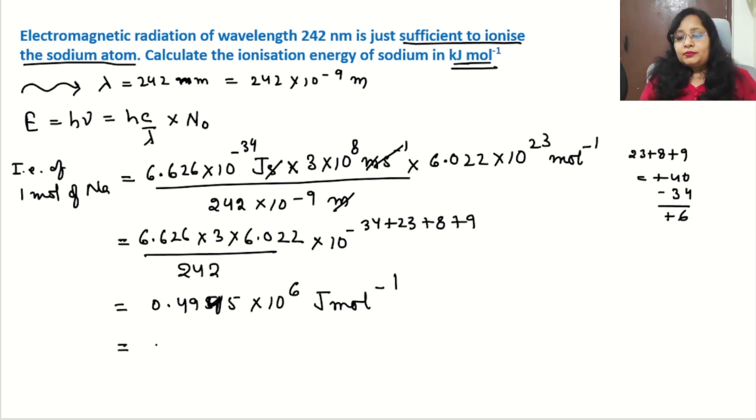So we can write 0.4945 into 10 to the power 6 into 10 to the power minus 3 kilojoule per mole. Now we can check: 0.4, if we shift the decimal, we can make 4.945 and the power will be changed.